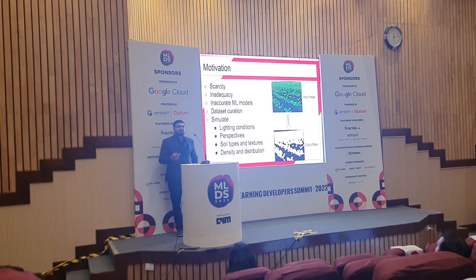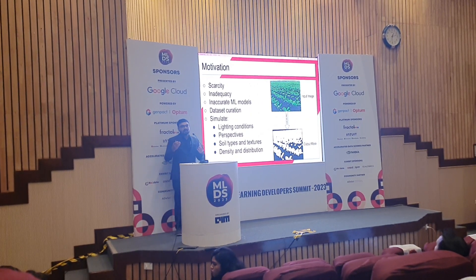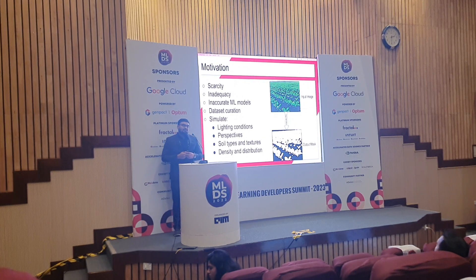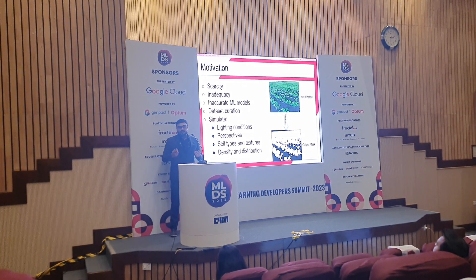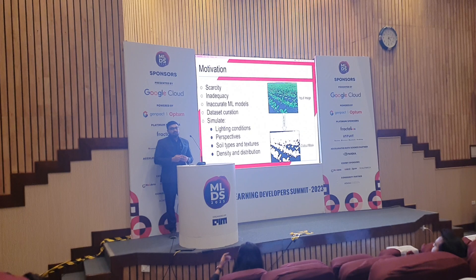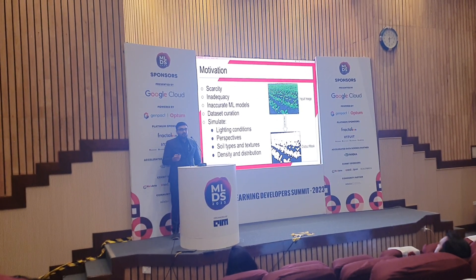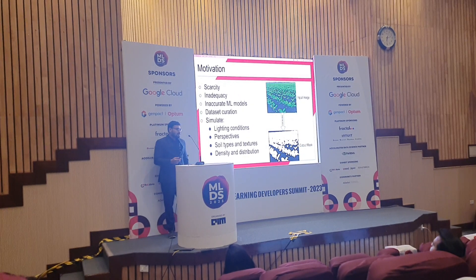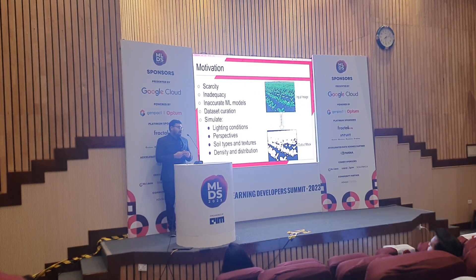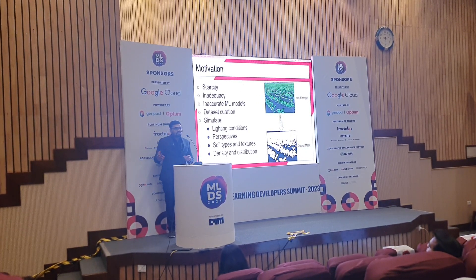The task we are trying to solve is semantic segmentation - specifically segmenting the crop and weed from the background at a sugar beet field. We didn't have enough data to train our machine learning algorithm, so we turned to public data. The public data for sugar beet was very scarce, very limited in number, and inadequate in terms of different scenarios. Training our ML algorithm on those images led to subpar performance and didn't translate to actual efficiency gains.